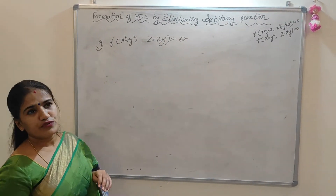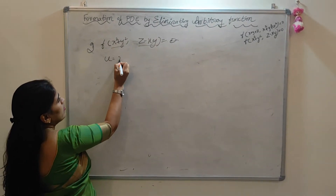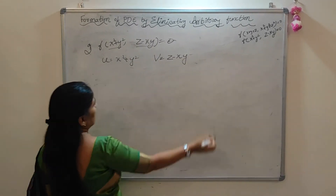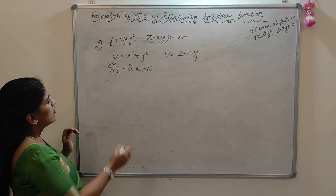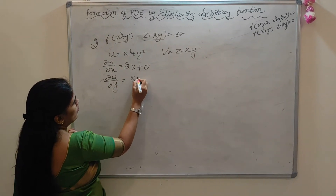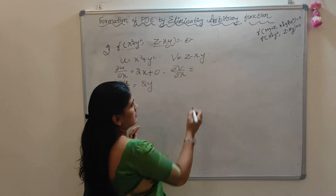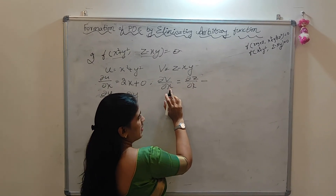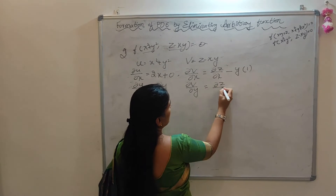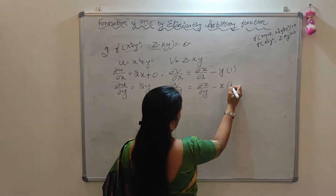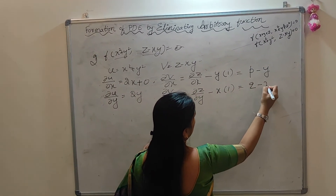We observe this is of the form φ(u, v) = 0, where u = x²+y² and v = z−xy. So ∂u/∂x = 2x, ∂u/∂y = 2y. For v: ∂v/∂x = ∂z/∂x − y = p − y, and ∂v/∂y = ∂z/∂y − x = q − x.